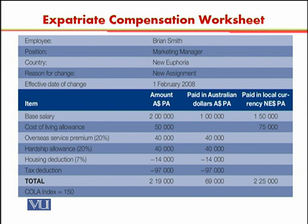Twenty percent of the base salary is the overseas service premium, which calculates to 40,000 dollars, and that will be paid in Australian dollars. Then 20% is the hardship allowance, which is again 40,000 dollars, also paid in Australian dollars.